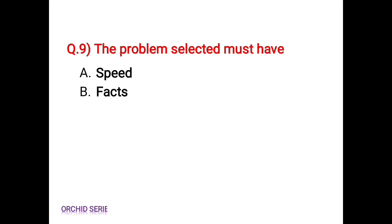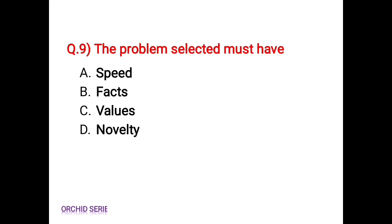Question number 9: the problem selected must have — option A: speed; option B: facts; option C: values; option D: novelty. The problems selected must have novelty. So the correct answer is option D.